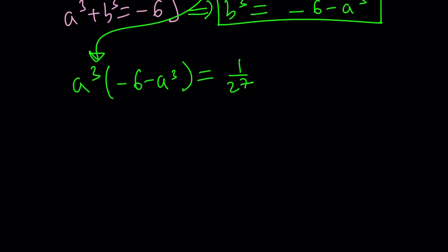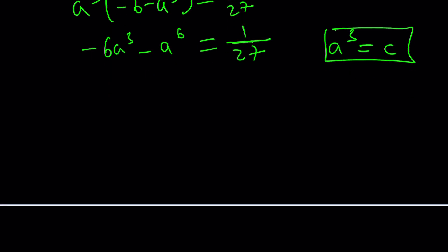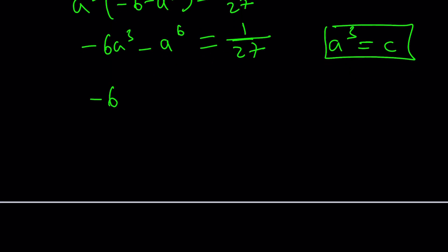Now we have A cubed minus B cubed, which is negative 6 minus A cubed, equals 1 over 27. When you distribute, you're going to get something like this. We got a hectic equation, but if you set A cubed equal to C, then you'll get a quadratic.